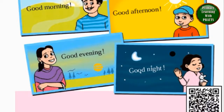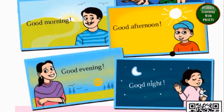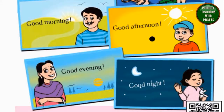English میں یہ 4 طرح کی greetings ہیں جو استعمال ہوتی ہیں۔ جب ہم کسی کو صبح ملتے ہیں تو English میں Good morning کہتے ہیں، Hindi میں Suprabhat۔ جب ہم کسی سے دوپہر میں ملتے ہیں تو کہتے ہیں Good afternoon۔ جب کسی سے شام کو ملتے ہیں تو English میں Good evening۔